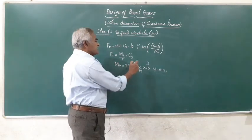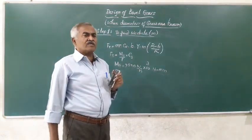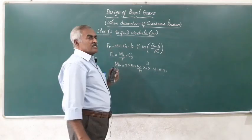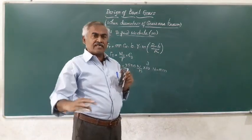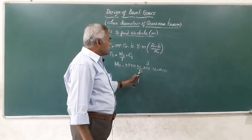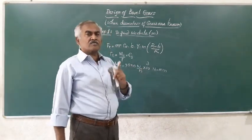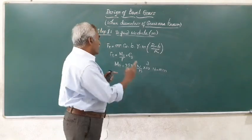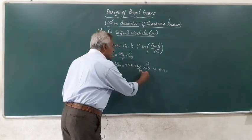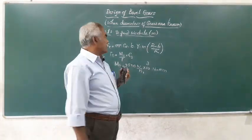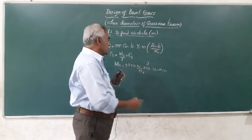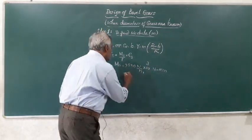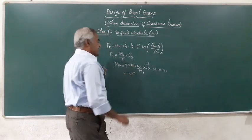Here, N stands for the power to be transmitted by the drive, and small n stands for the speed of the weaker member — in this case, N1, the speed of the pinion. Both values will be given in the question, allowing you to calculate Mt.